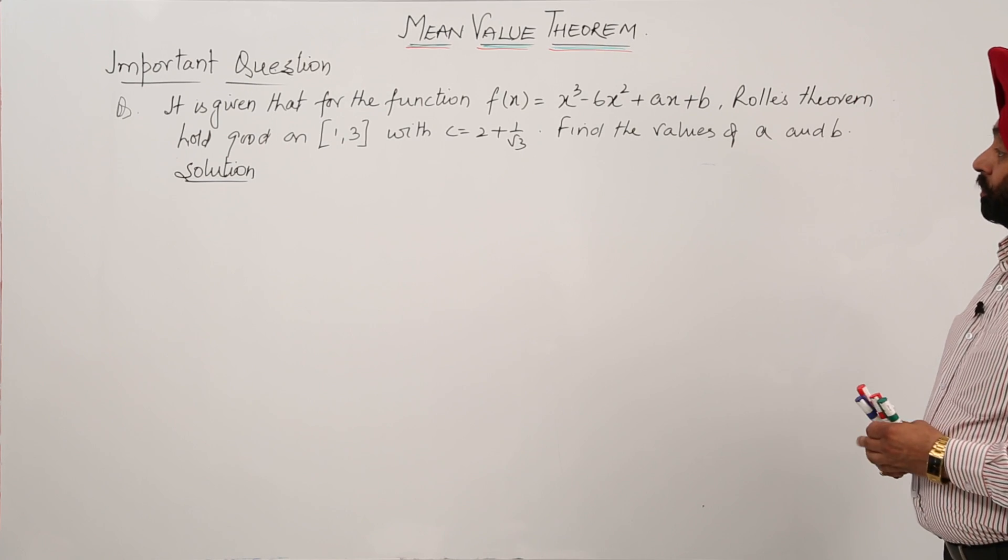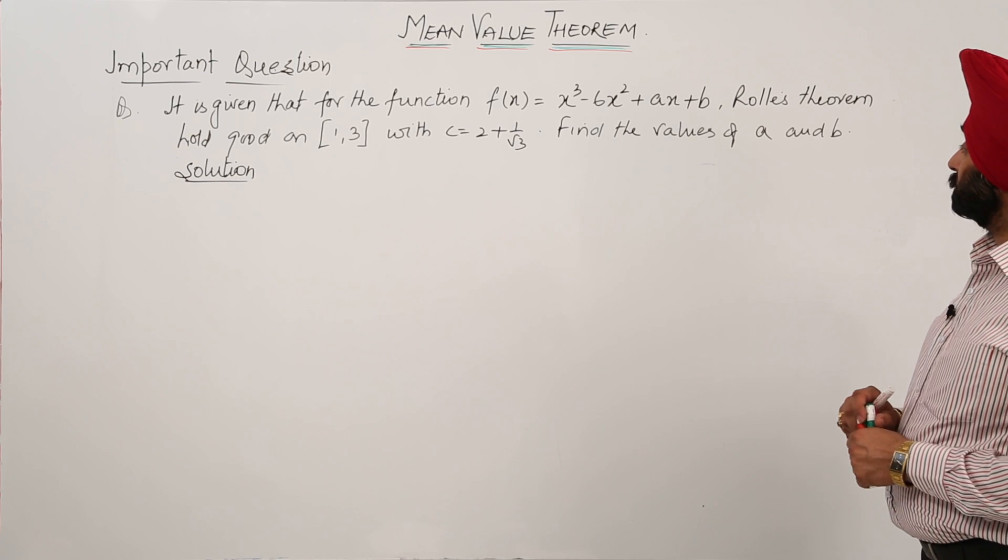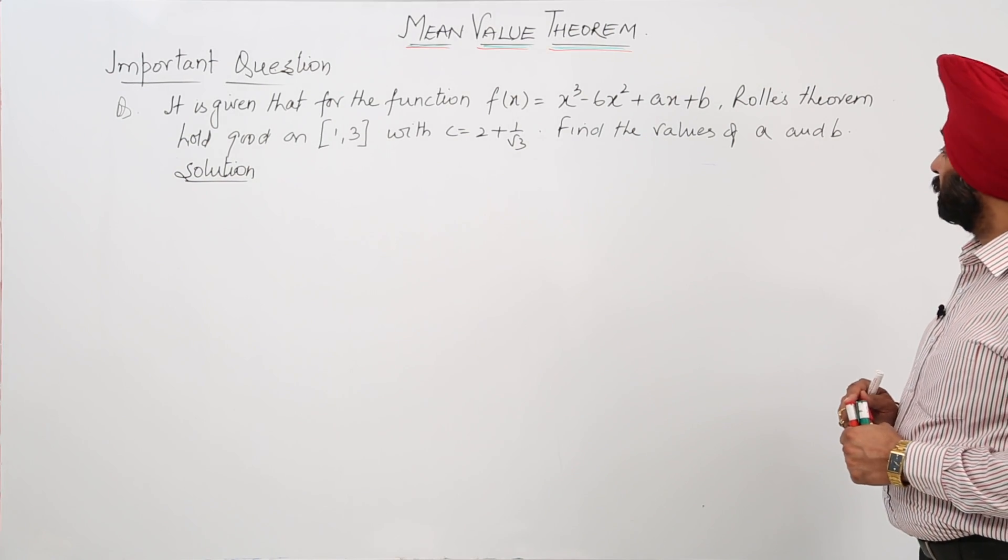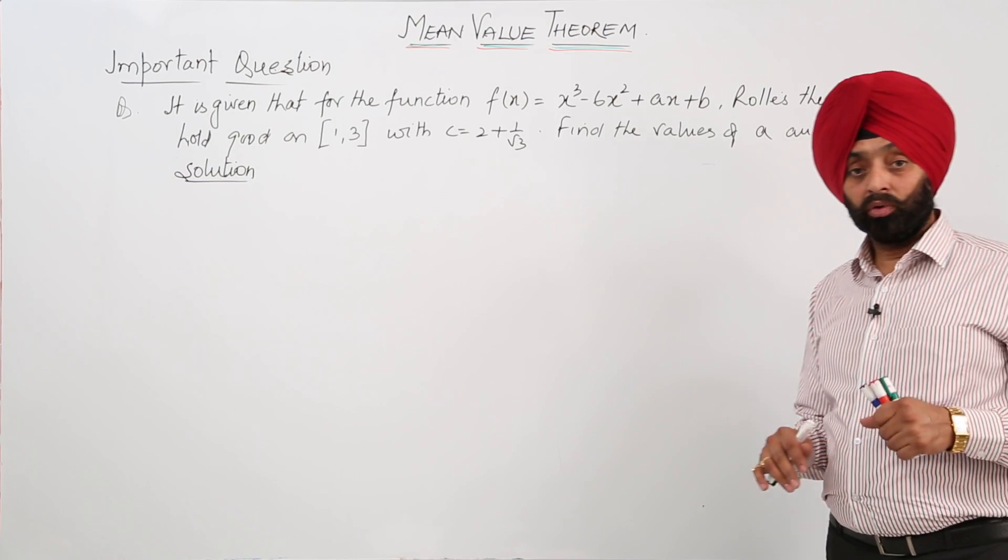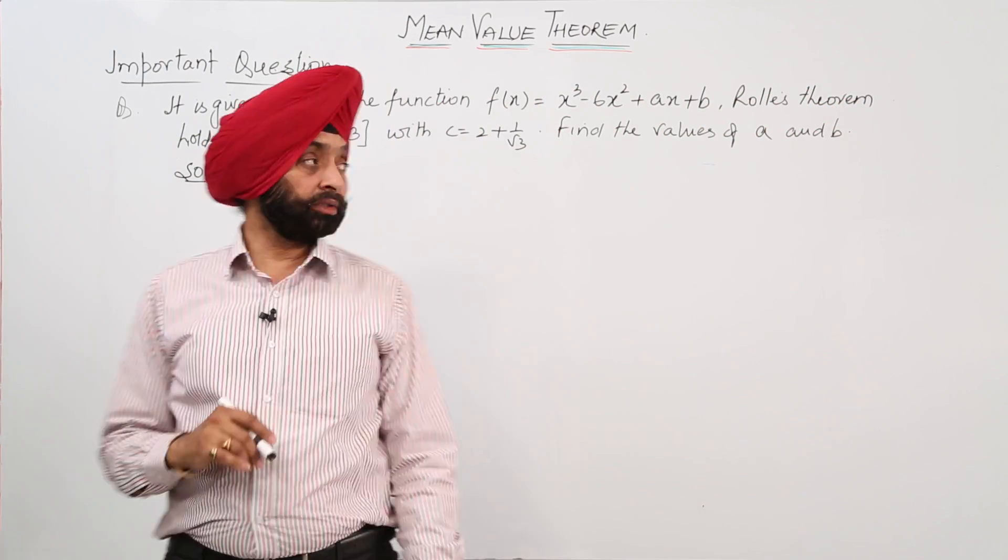Next question, we are having, it is given that for the function f(x) = x³ - 6x² + ax + b, Rolle's theorem holds good on the interval [1, 3], on the closed interval.